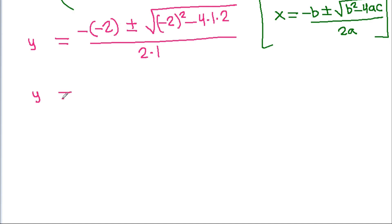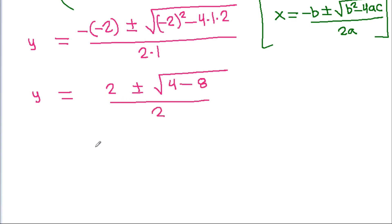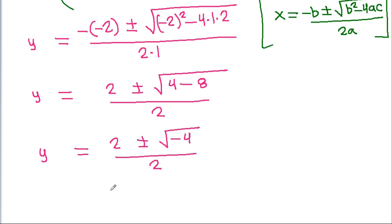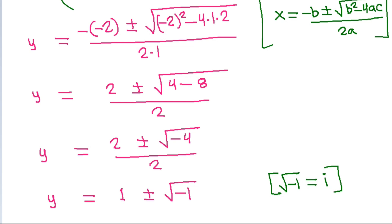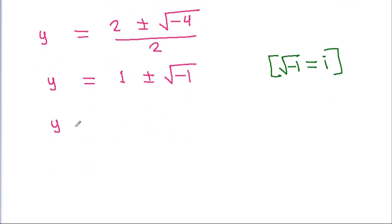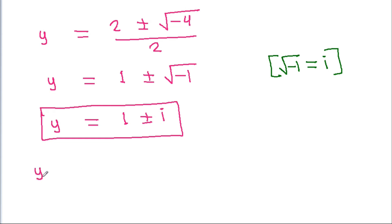This gives y equals 2 plus or minus the square root of (4 minus 8), all divided by 2. Simplifying, y equals 1 plus or minus the square root of (−4) divided by 2, which equals 1 plus or minus the square root of −1. Since √(−1) equals i (iota), we get y equals 1 plus i and y equals 1 minus i.